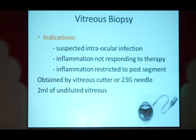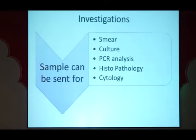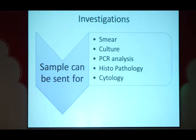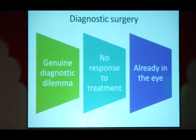Vitreous biopsy is done when intraocular infection is suspected, when inflammation does not respond to therapy, or when restricted to the posterior segment. Sample is obtained by vitreous cutter or 23-gauge needle by a skilled ophthalmologist or vitreoretinal surgeon; 2 ml of diluted vitreous should be collected. Samples from AC tap or vitreous biopsy go for smear — gram stain, KOH, Ziehl-Neelsen if TB is considered — culture for bacteria, fungi, and other suspected organisms, PCR for rapid results and fastidious organisms, histopathology for granulomatous infections, and cytology to rule out masquerades. Diagnostic surgery should be weighed carefully — it is indicated for genuine diagnostic dilemma, failure to respond, or when already inside the eye operatively.